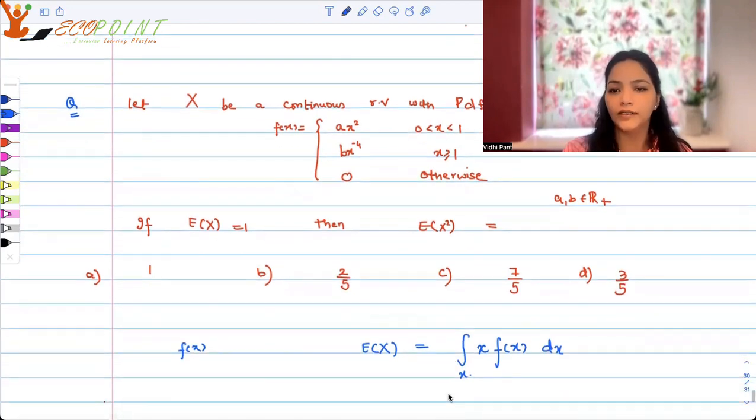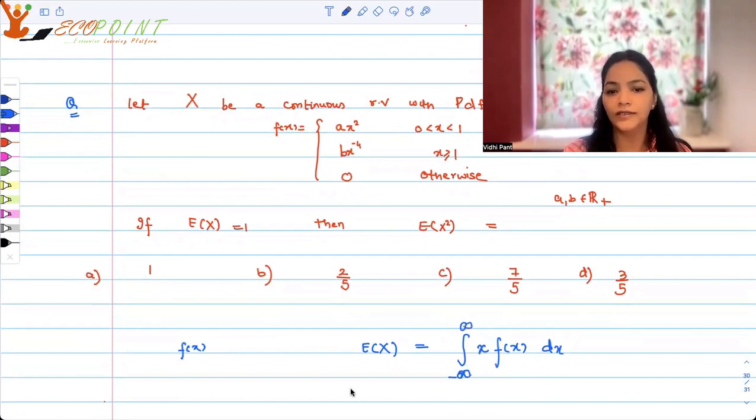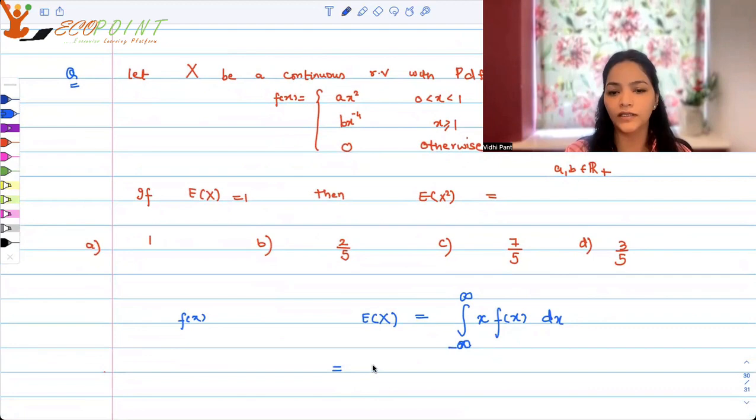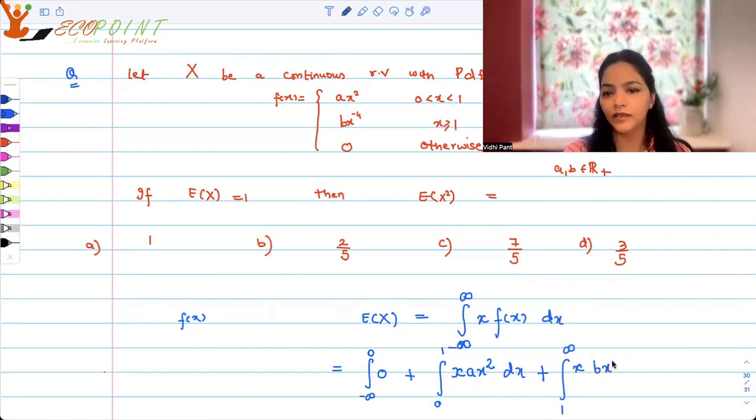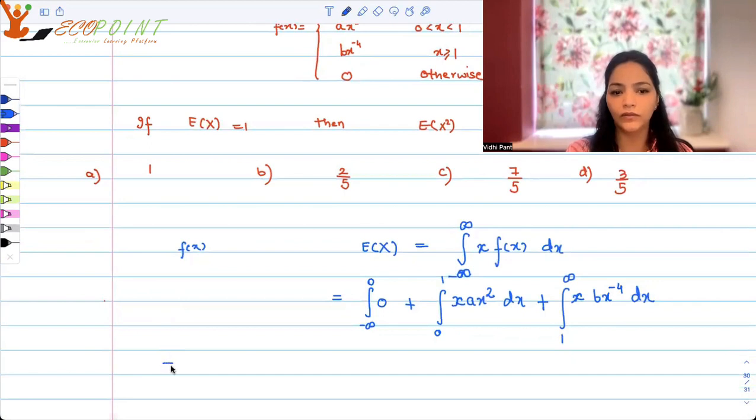So it's from minus infinity to infinity. Now your function is defined in a particular way. From minus infinity to 0, the probability is just 0, so nothing there. From 0 to 1, probability is ax squared, so expected value will be x into ax squared dx. From 1 to infinity, probability is b x to the power minus 4, so expected value will be x into b x to the power minus 4. This is how you can write down your expected value.